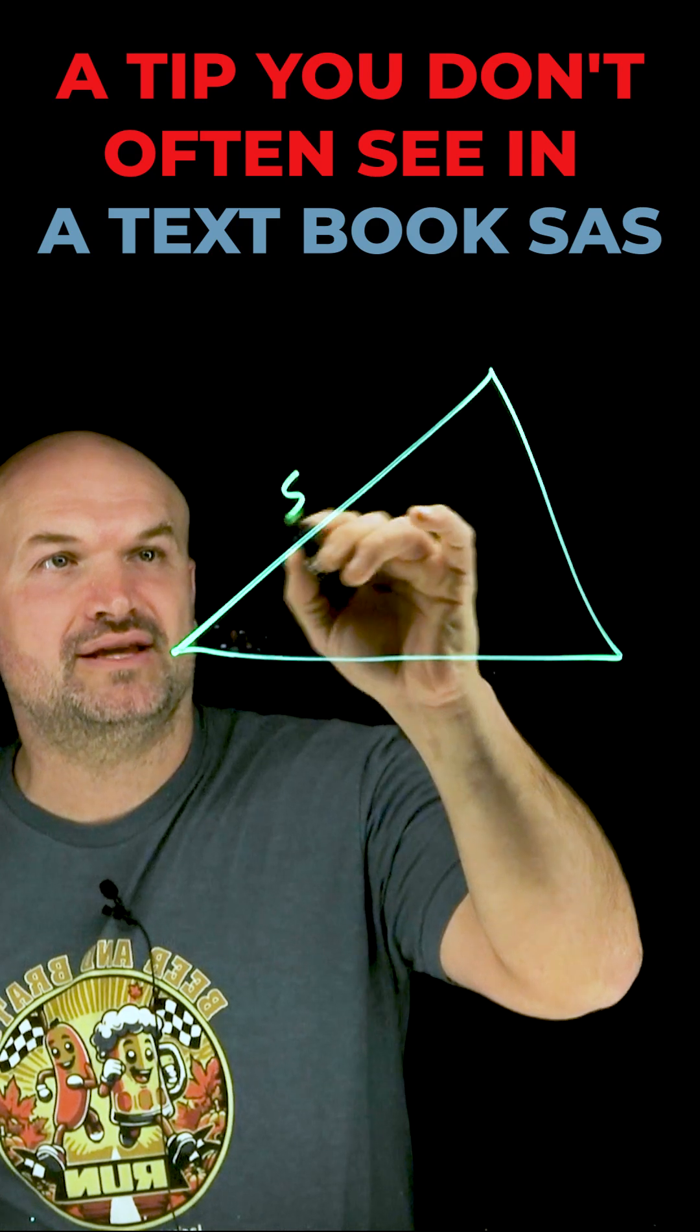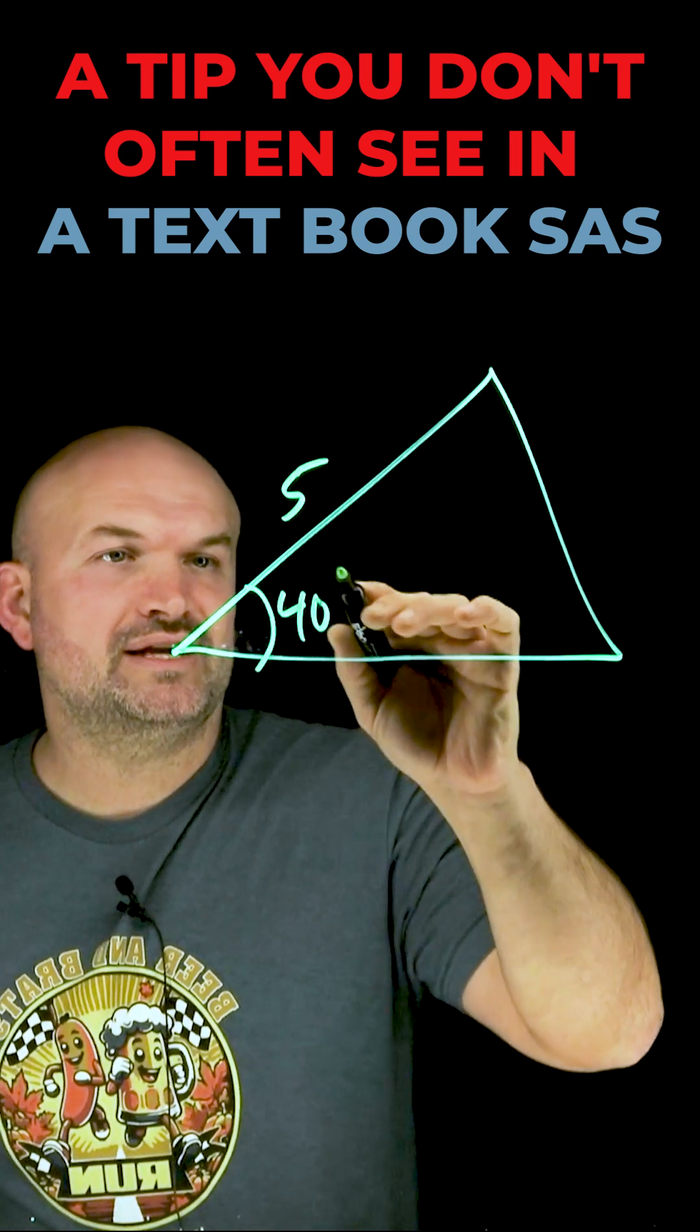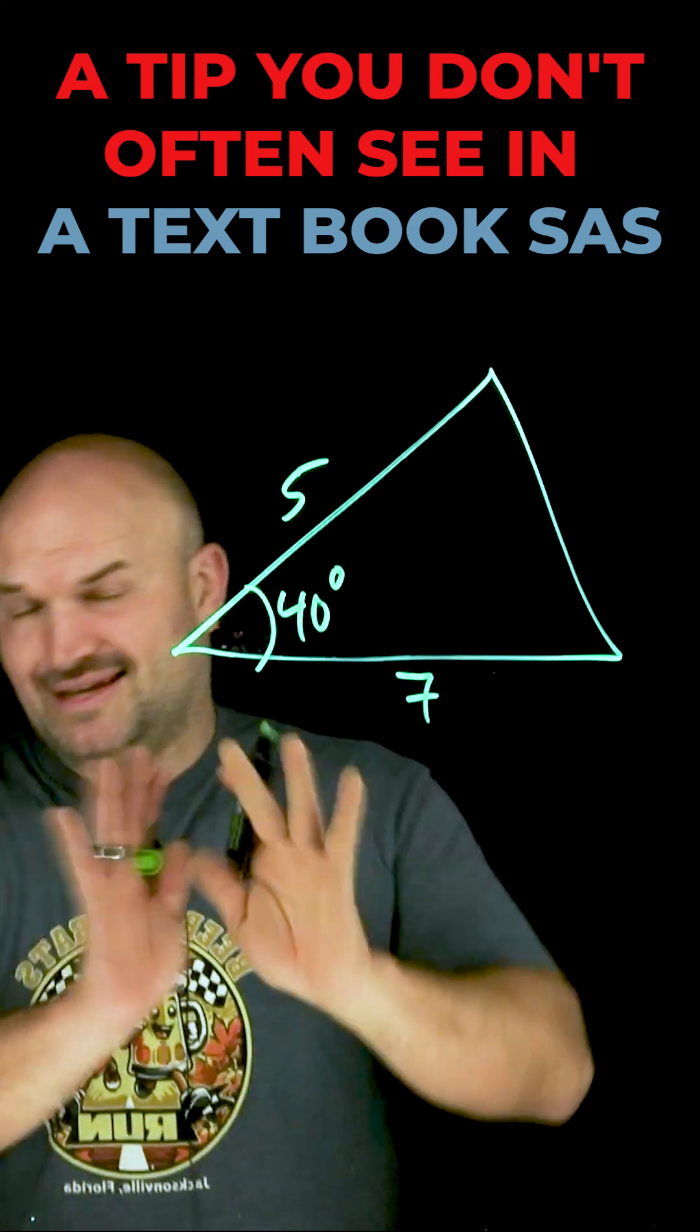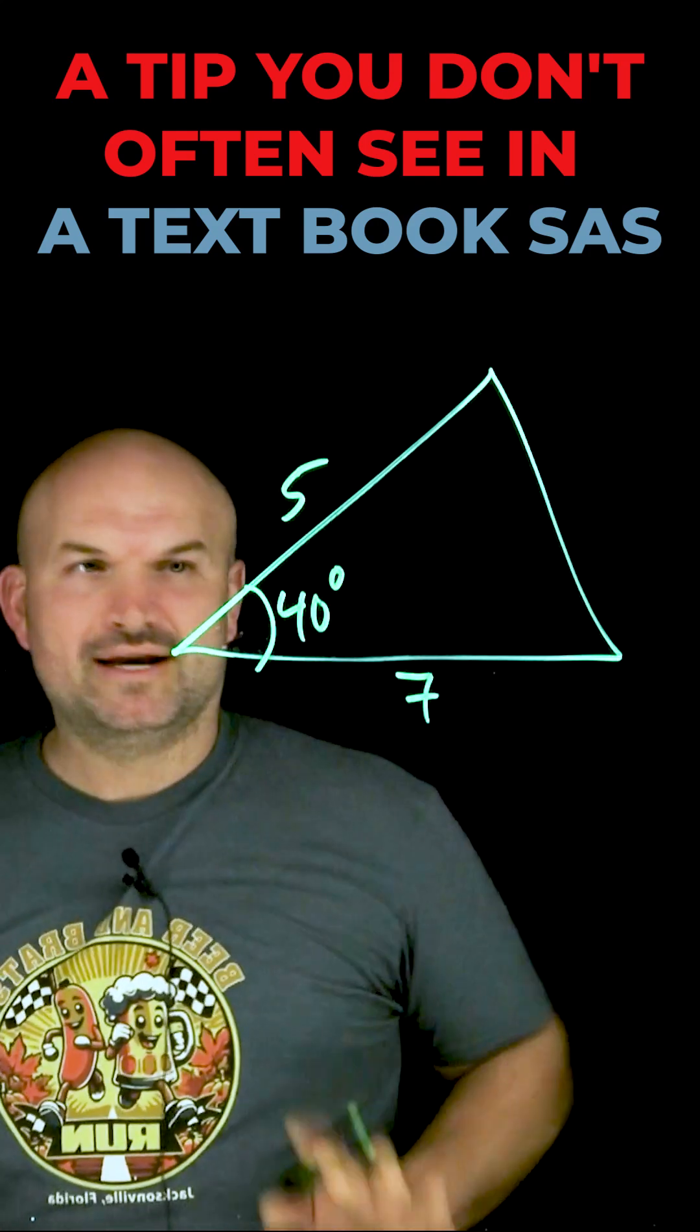So that means we're going to have something like 5, 40 degrees, and then like 7. In this case we don't have a ratio, so we have to use the law of cosines. We can't use the law of sines. But how do we approach this?